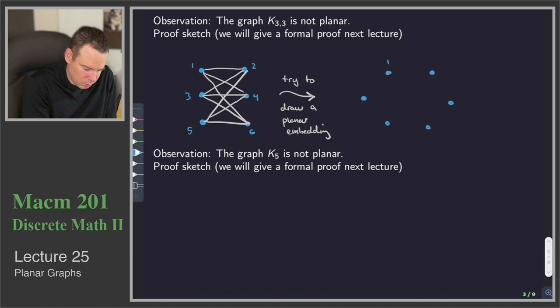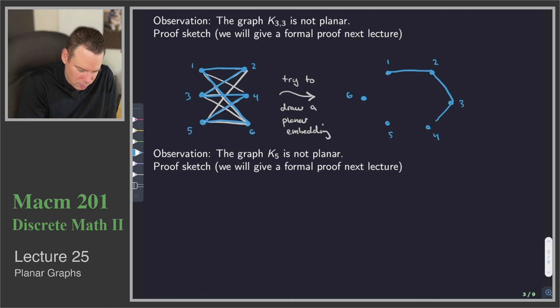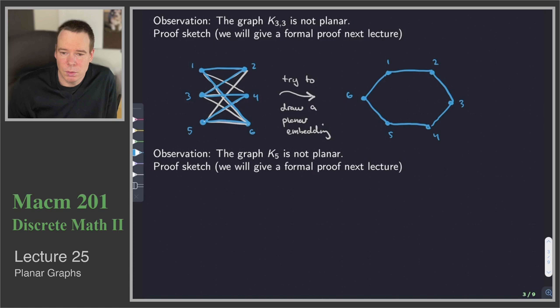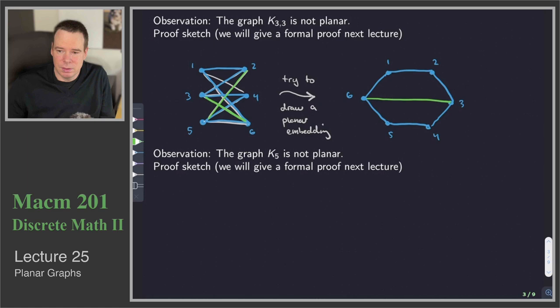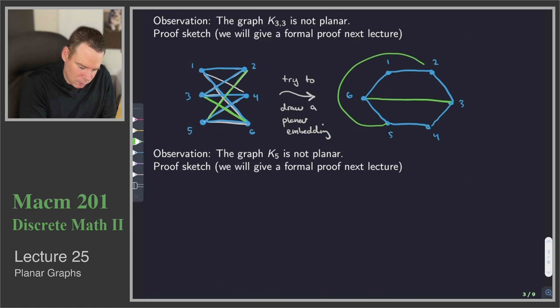I'm going to try to redraw the graph just to get a feel for why it perhaps isn't planar — analogous to dragging the vertices around. I'll number the vertices: 1, 2, 3, 4, 5, 6. I notice there's a cycle: 1 to 2, 2 to 3, 3 to 4, 4 to 5, 5 to 6, 6 back to 1. In order to get this redrawing, I have to include all the other edges — I'm missing the edge 6 to 3, the edge 2 to 5, and so far I've avoided all crossings. I still have one edge left to put in.